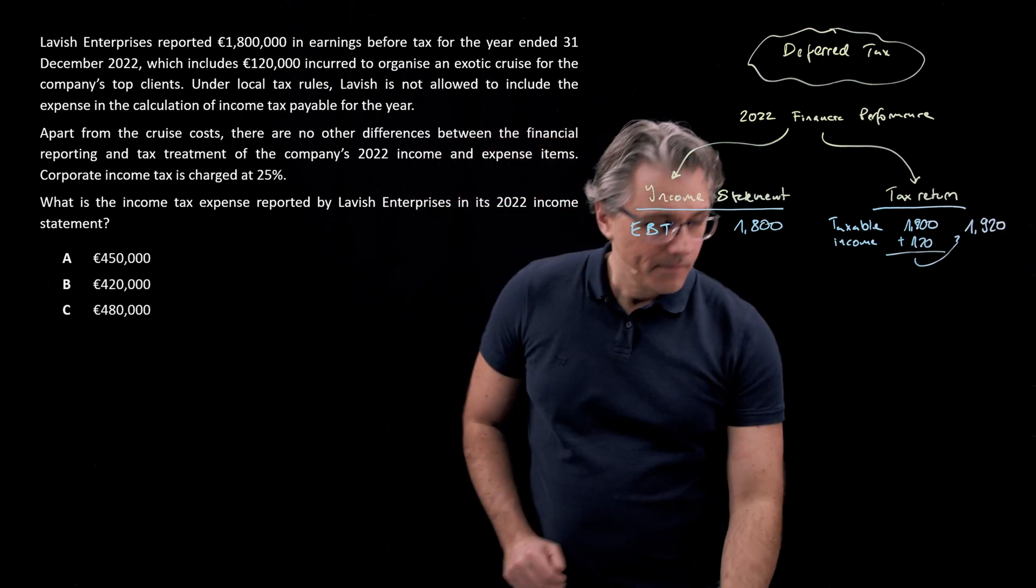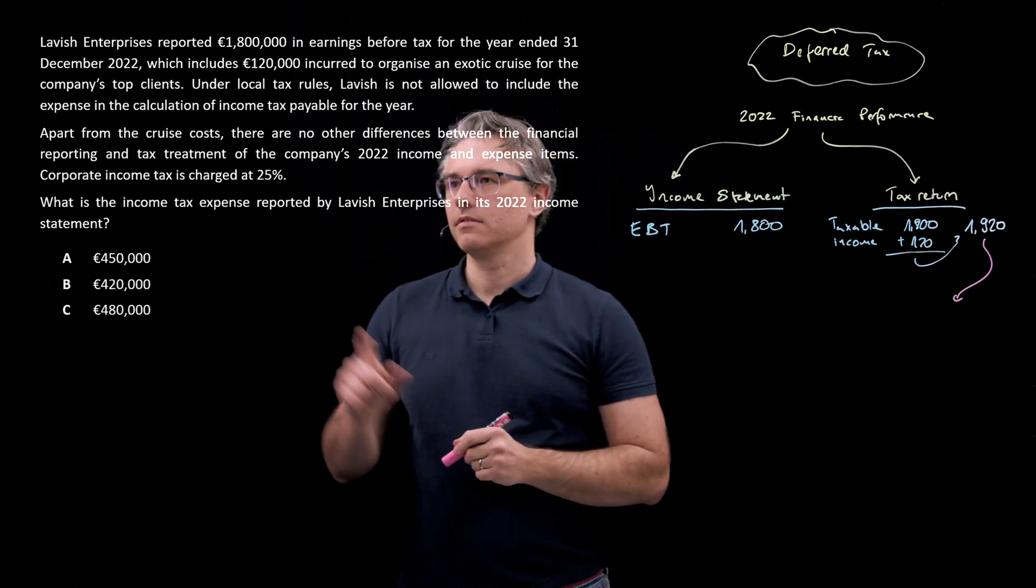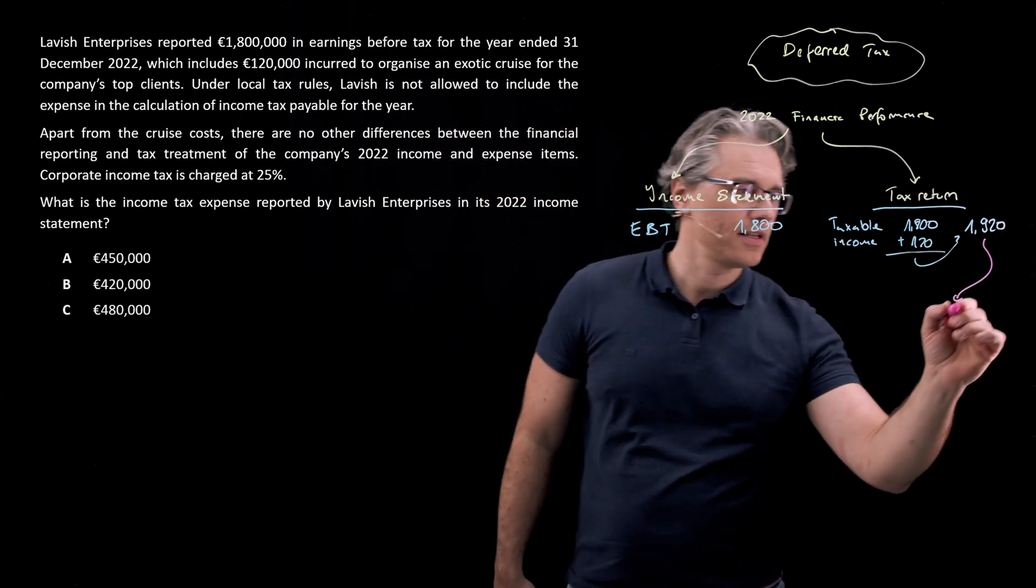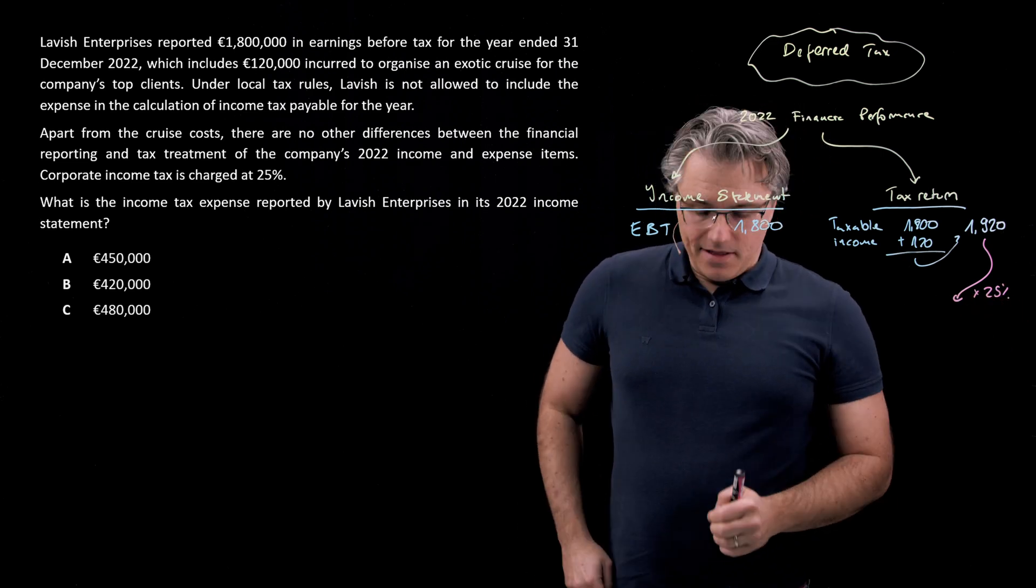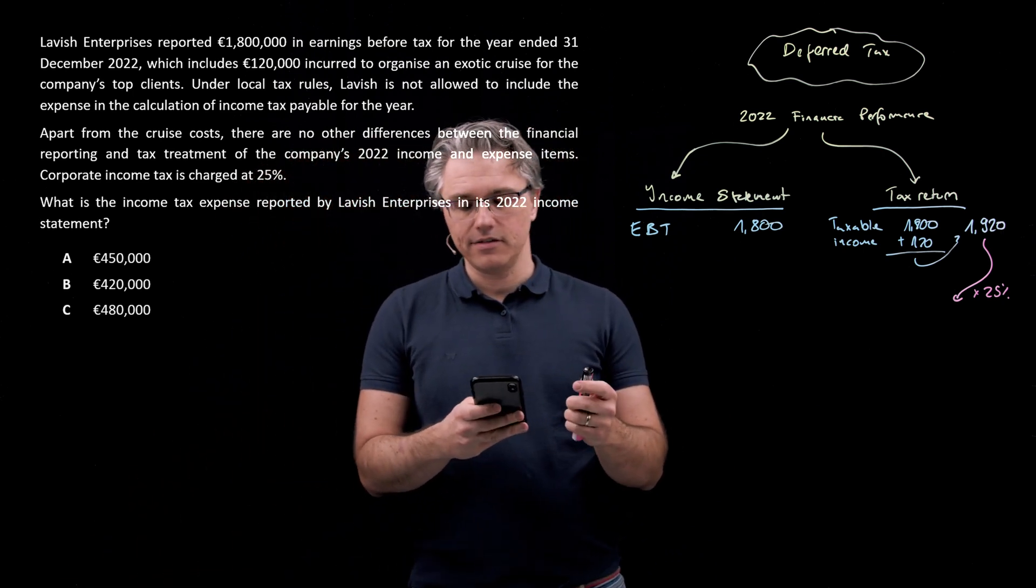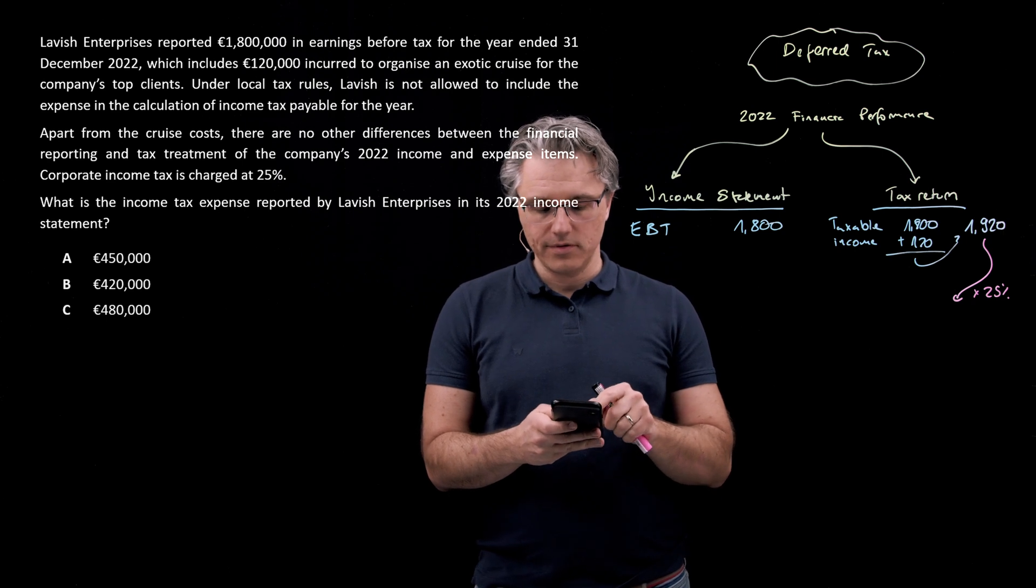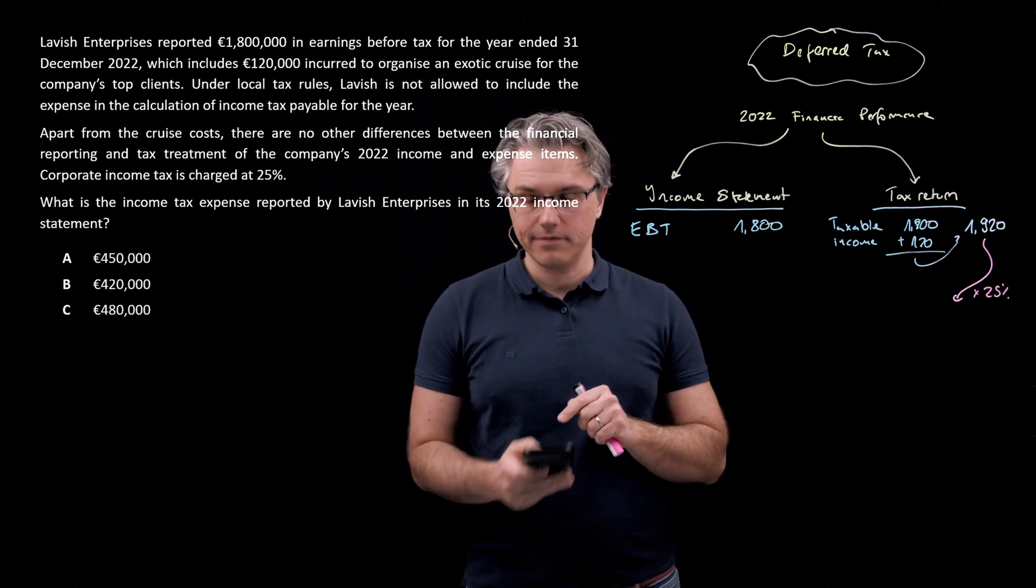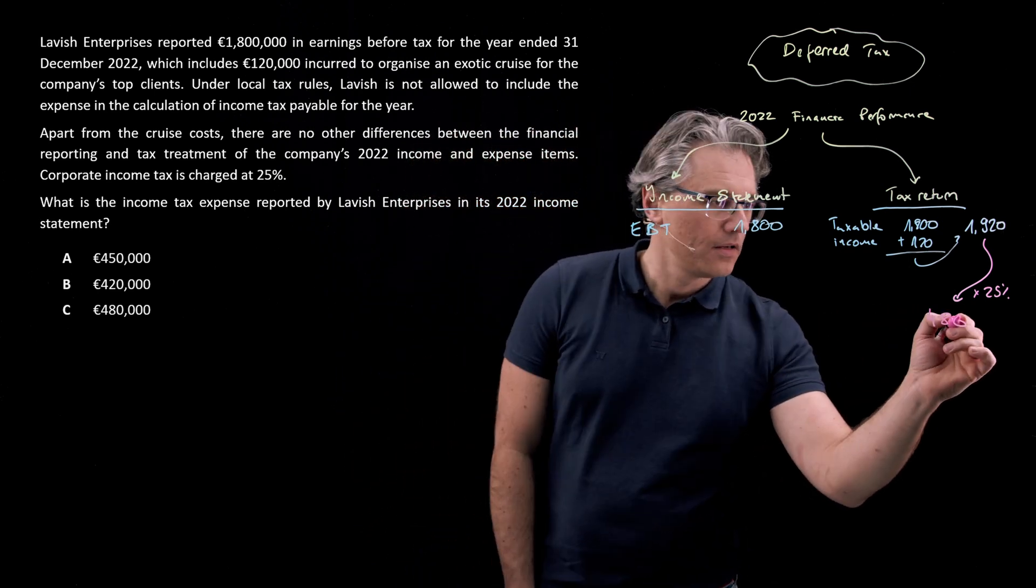Now, let's see what that gives. The tax rate we're given over here is 25%. So times 25%. Let me take my calculator from over here and do this computation. So 1,920 times 25%, 480,000 of tax payable.